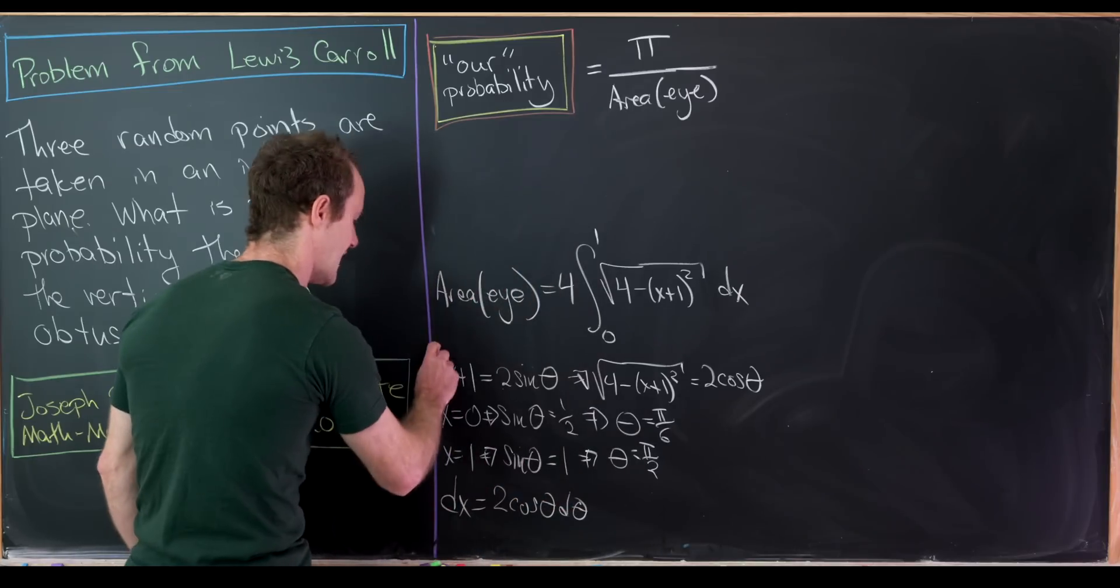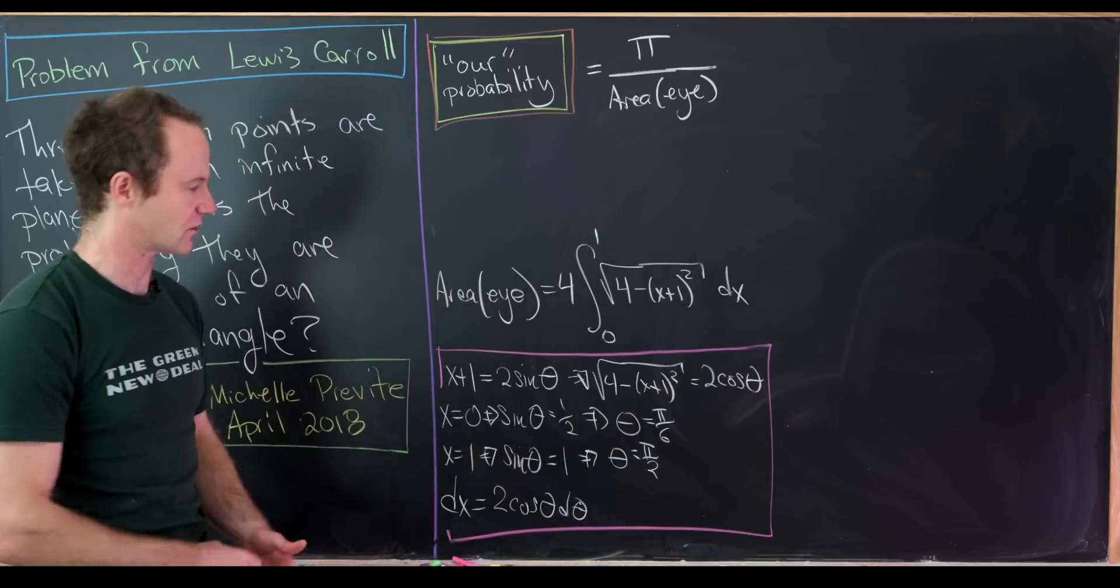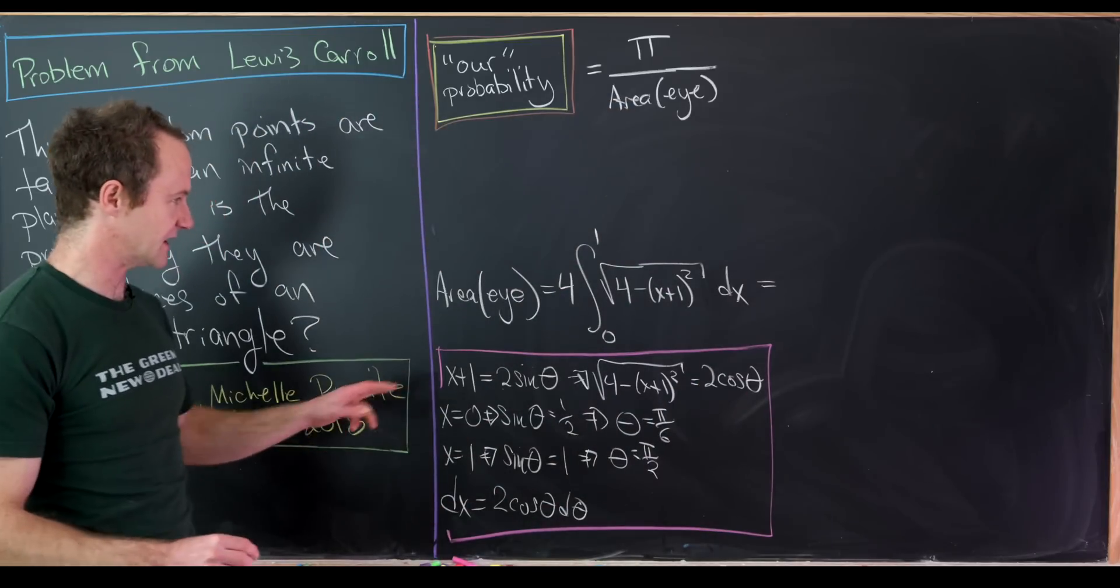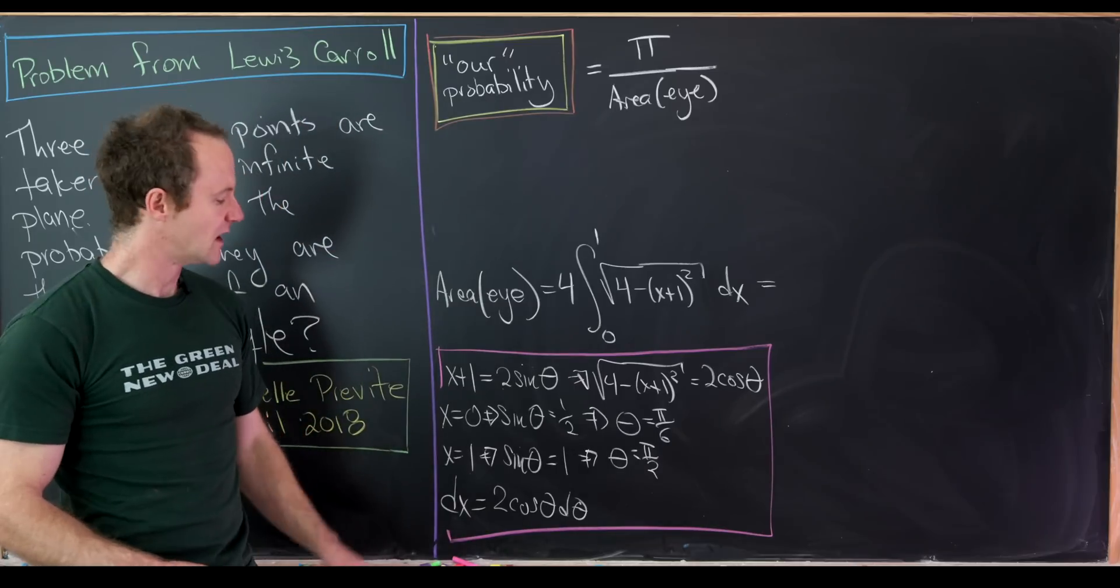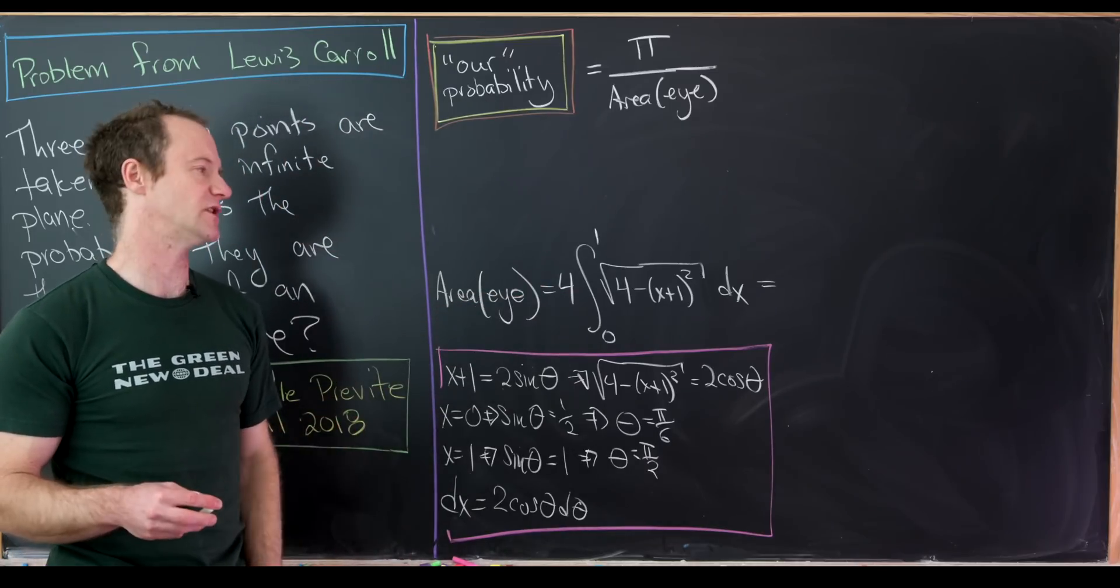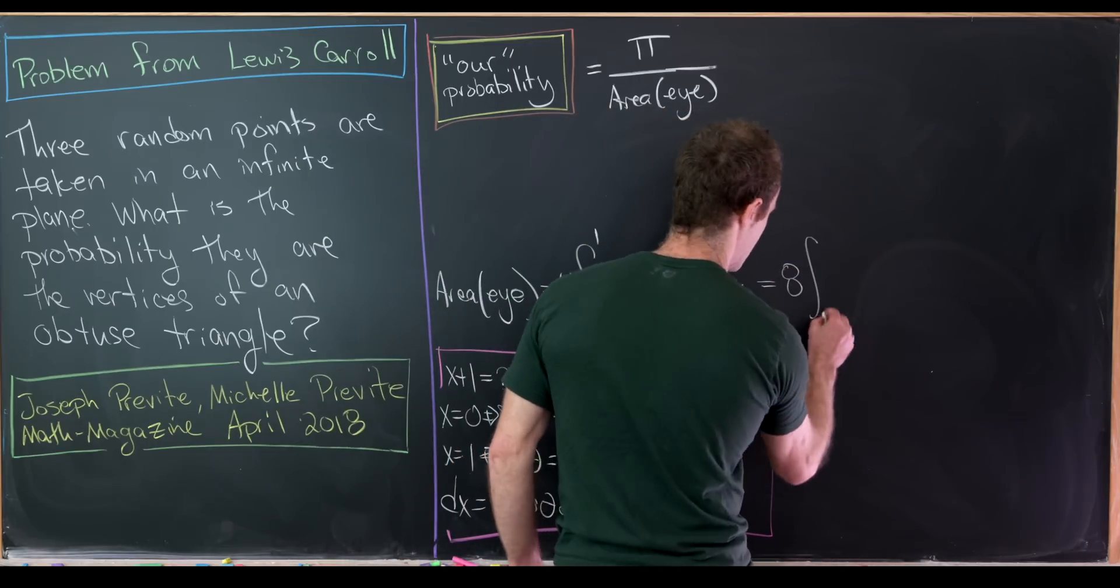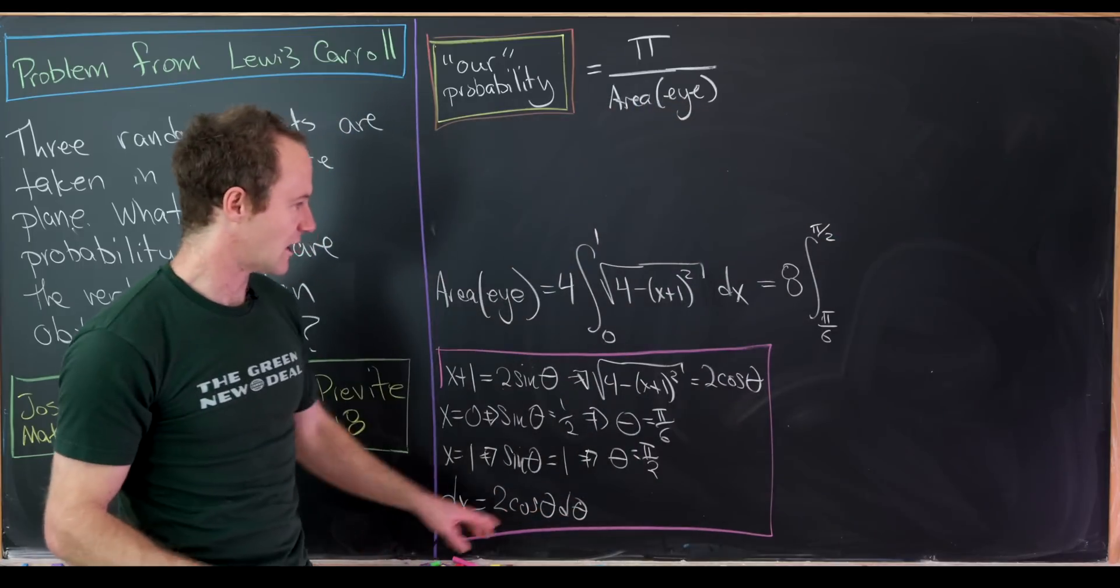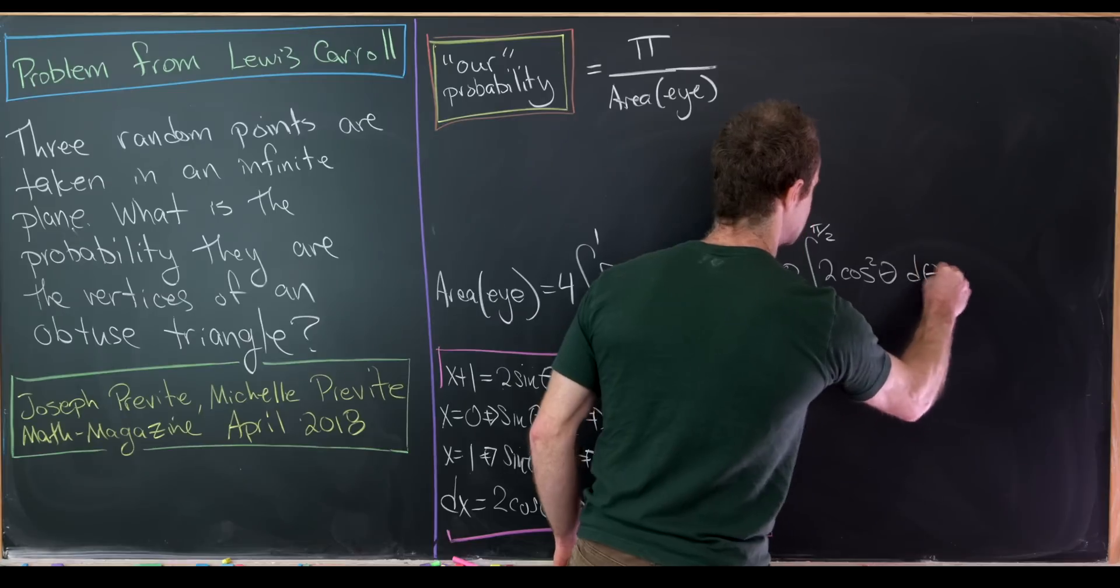And this is everything we need to change this from an x integral to a theta integral. So let's see what it looks like. We'll end up with something like this. We've got a 4 from here, a 2 from here, and a 2 from here. I'm going to bring one of those 2s out and leave one inside. We'll see why we do that along the way. So that'll give us 8 times the integral from pi over 6 up to pi halves.